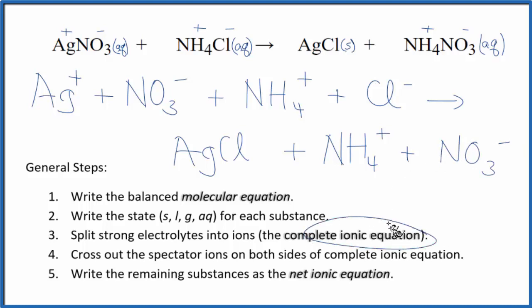So this is the complete ionic equation. Now, we can cross out spectator ions. They're on both sides. In effect, they don't actually do anything. They don't change. So we're not interested in them.